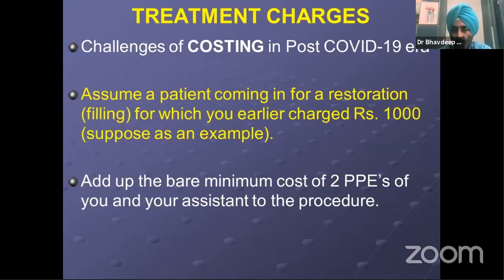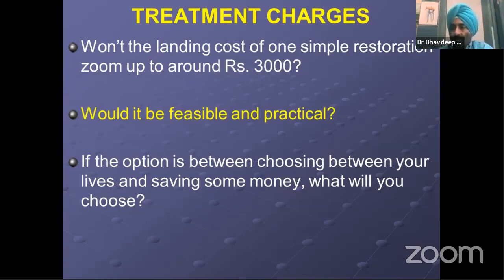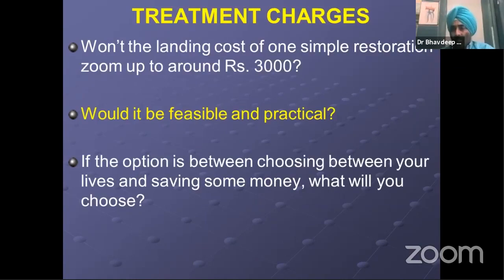Equipments are not to be added as a direct cost — they are fixed assets. Whatever equipment we buy, a portion of their cost is taken, and that is known as depreciation — the Written Down Value or WDV. Most dental gadgets come with a 15% written down value. So if equipment costs ₹10,000, you will add ₹1,500 as your cost for the whole year — that is the depreciation portion you add to your clinic's annual cost calculations.